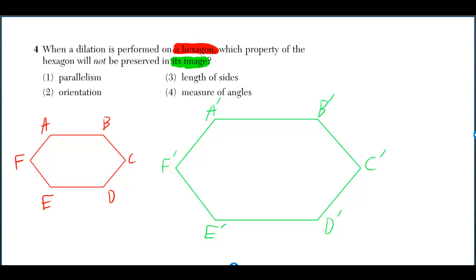When a dilation is performed on a hexagon, which property of the hexagon will not be preserved in its image? It's pretty obvious if you know what these terms mean.